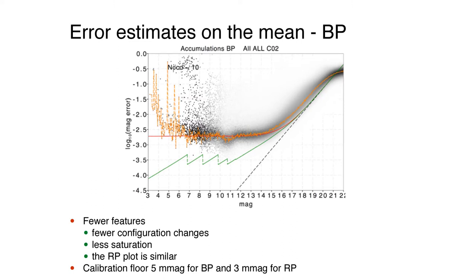For BP and RP, the precision plots have far fewer features due to fewer configuration changes and less saturation. In general, at the bright end, brighter than 14 or 15th magnitude,